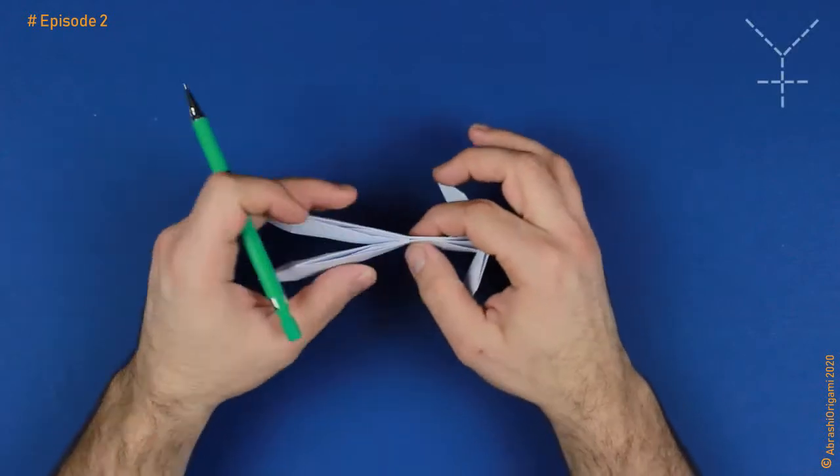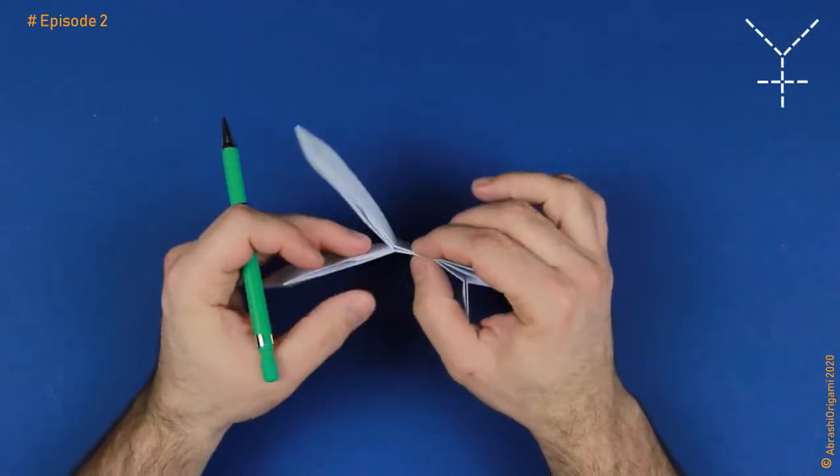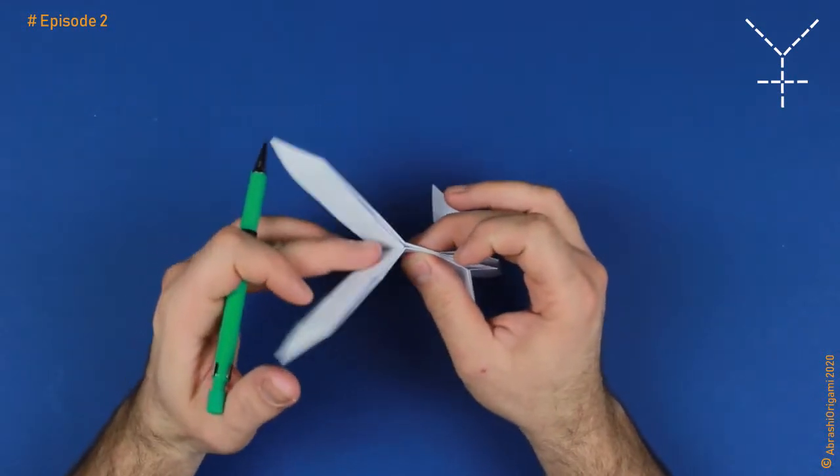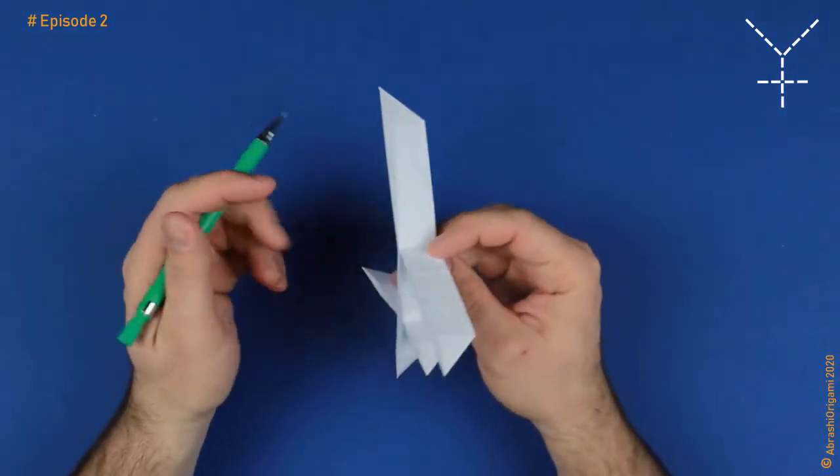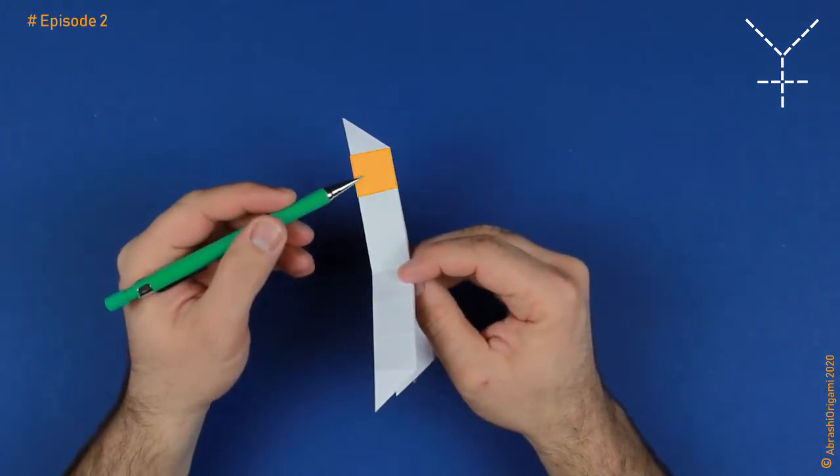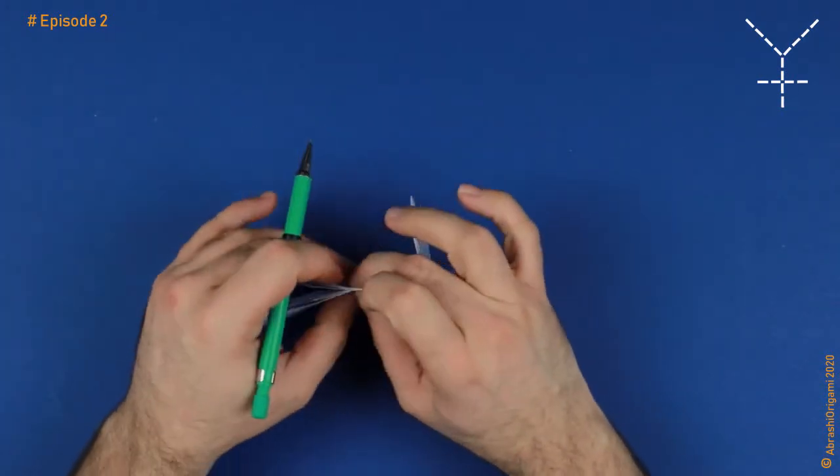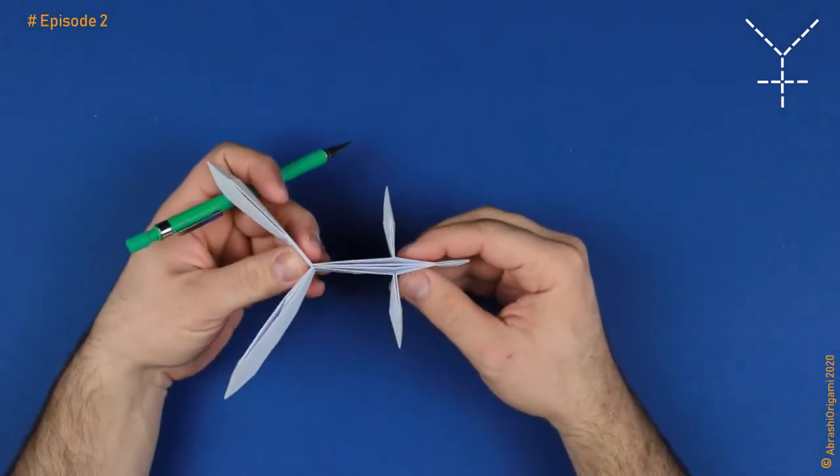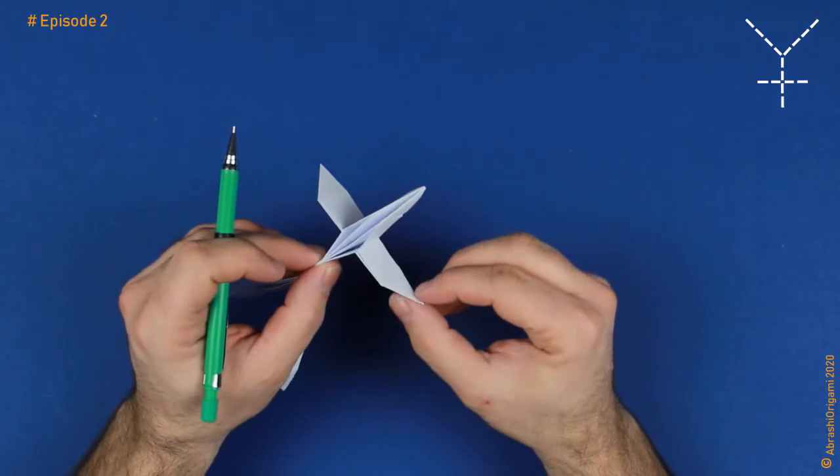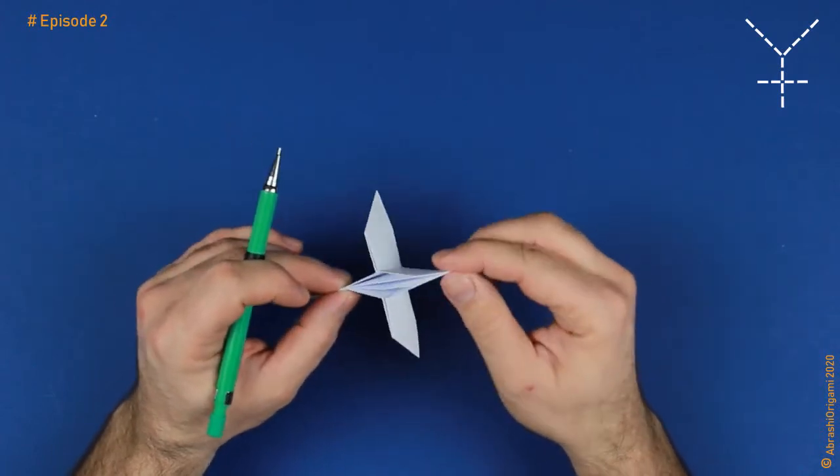Now we can begin with our first, very simple example. This base consists of only 5 flaps. 2 are large, each 4 units long. Do you see the number of squares they are made of? 1, 2, 3, and 4. That's why we said they are 4 units long. Also, we have 3 flaps over here, each 2 units long. The first, the second and the third one.